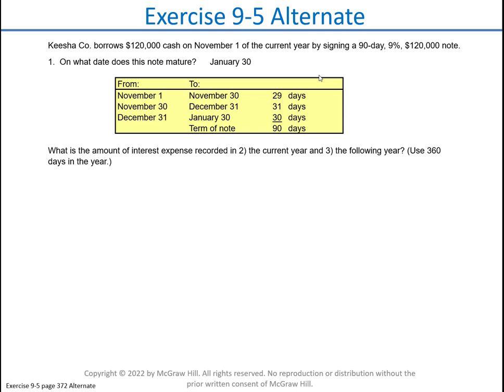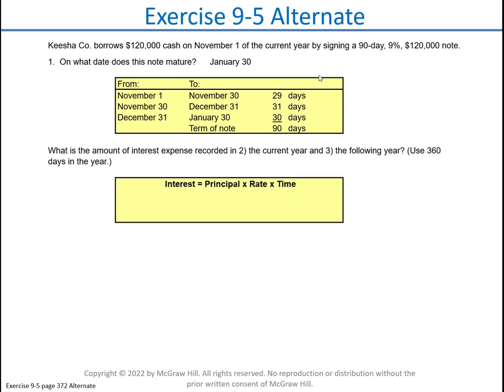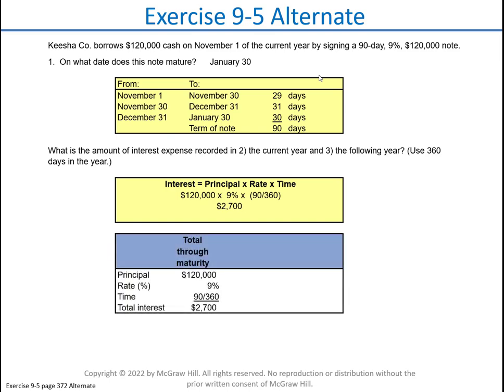How much interest expense will be recorded in the current year and how much in the following year? We're using 360 days as the number of days in a year, mainly because the numbers come out a lot better. Interest is computed as principal times rate times time. This is a $120,000 note at nine percent for 90 days divided by 360.